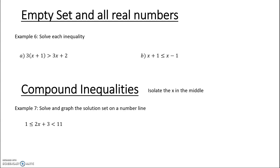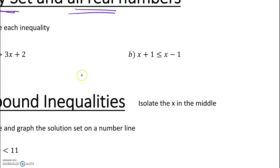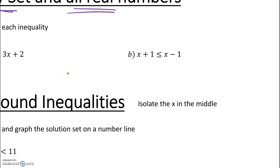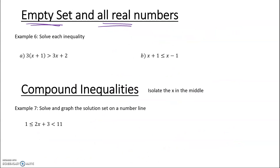This last slide covers the empty set and all real numbers — kind of like the no-solution or inconsistent cases. Distributing gives 3x + 3 > 3x + 2. Subtracting 3x from both sides gives 3 > 2. Is 3 always greater than 2? Yes — so this is true for all real numbers. Any number you plug in will hold true.